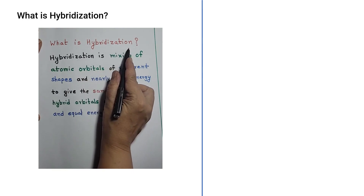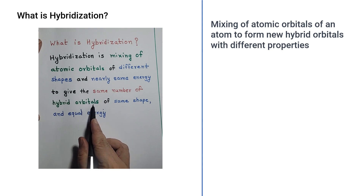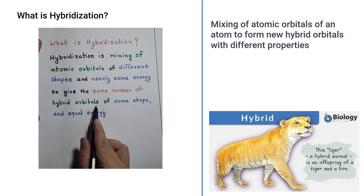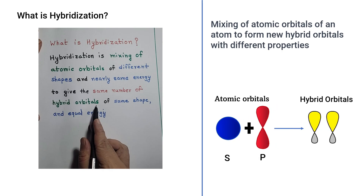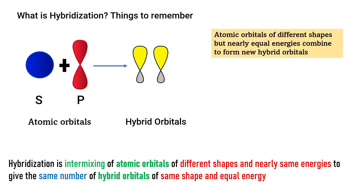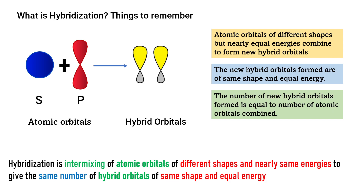In simple words, hybridization is the mixing of atomic orbitals to form hybrid orbitals. Just as you know the concept of hybridization in animals or plants, likewise in chemistry atomic orbitals combine to form new hybrid orbitals with different properties. You should remember certain things: atomic orbitals of different shapes may combine to form new hybrid orbitals, but they should be of nearly equal energies. The new hybrid orbitals formed will be of the same shape and equal energy.